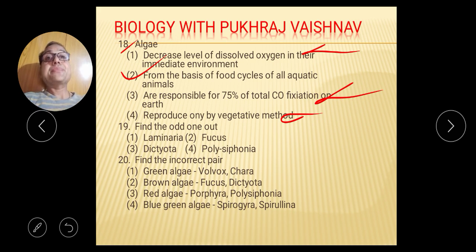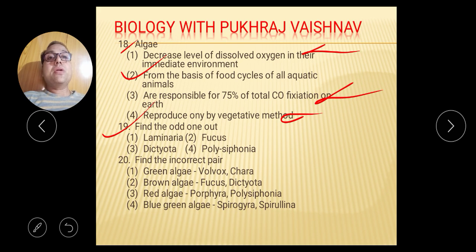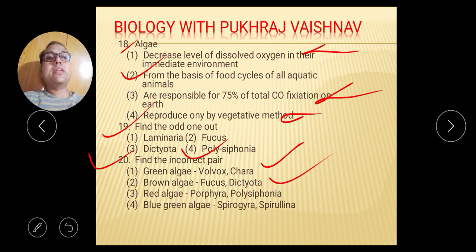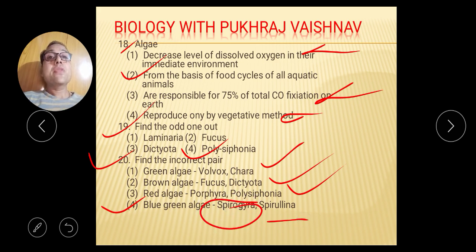Question number 19: Find the odd one out — Laminaria, Fucus, Dictyota are all brown algae. Polysiphonia is red algae. So the right answer is option 4. Question number 20: Find the incorrect pair — Green algae: Volvox and Chara, correct. Brown algae: Fucus and Dictyota, correct. Red algae: Porphyra and Polysiphonia, correct. Blue-green algae: Spirogyra — no, Spirogyra is green algae. So this option is incorrect. The right answer for question 20 is option 4.